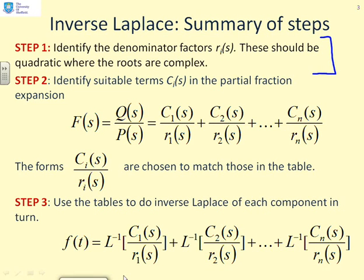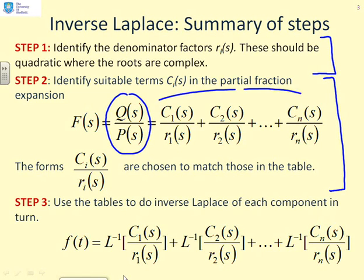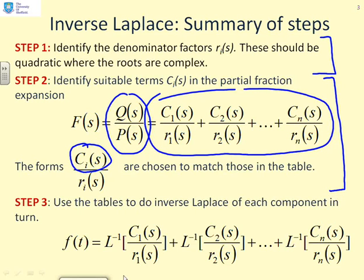This slide focuses on step two, that is the partial fraction step. What we need to do is write out our transfer function, which originally was Q over P, as a sum of smaller terms: C1 over r1 plus C2 over r2, all the way up to Cn over rn, where these r's are the minimal form factors, first order for real roots, quadratic for complex roots. Having written it in this form, we want to identify the values for Ci of s. That's the real challenge.